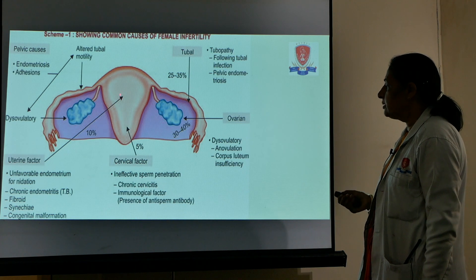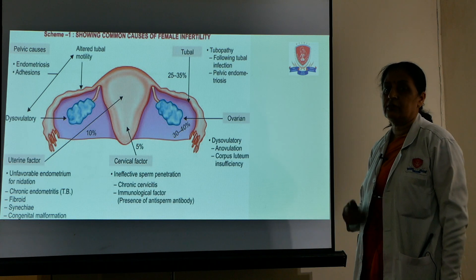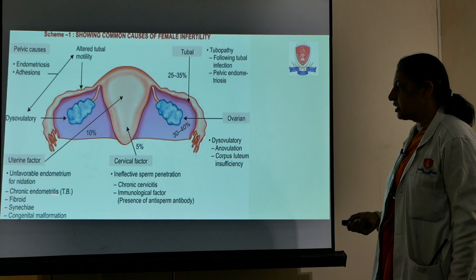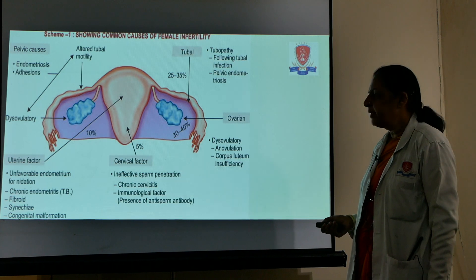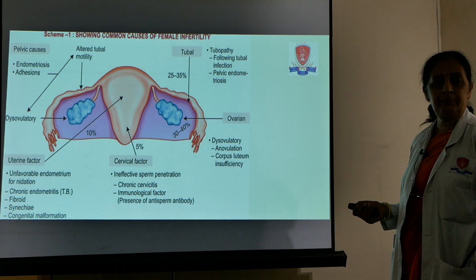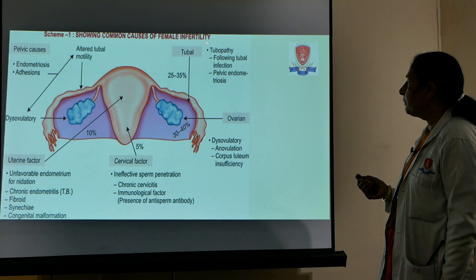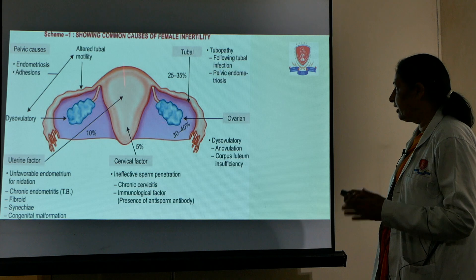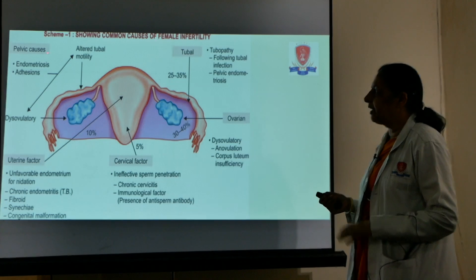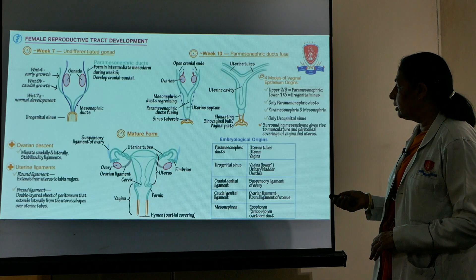Going through cervical factors from bottom upwards: there is infective sperm penetration, chronic cervicitis, and immunological factors with anti-sperm antibodies. Uterine factors include unfavorable endometrium, chronic endometritis especially tuberculosis, synechiae formation as in Asherman's syndrome, and congenital malformations or fibroids. Ovarian causes include anovulation especially PCOS and corpus luteum deficiency. Tubal factors include blockage or infection of the tube, endometriosis, and other pelvic or peritoneal causes.